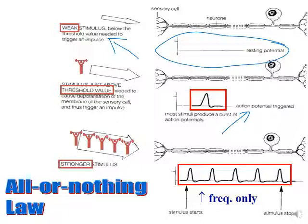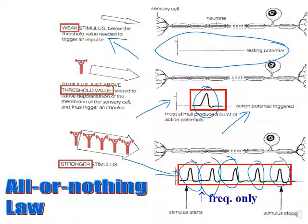Stimuli at or above the threshold are considered effective stimulation. Whether the stimulus is at threshold or stronger, all action potentials have the same amplitude — the value is constant. What differs between stronger and weaker effective stimuli is the frequency: how many times the action potential repeats. So the amplitude is approximately constant while the frequency differs.